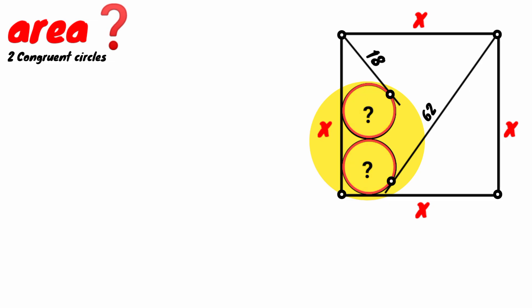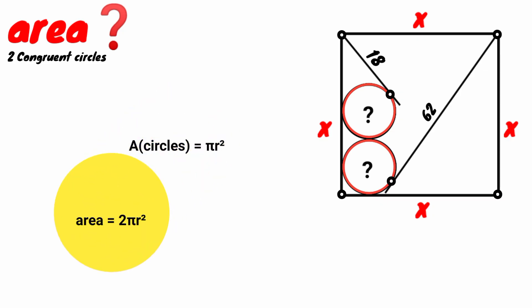Well, it is very simple. The formula for calculating the area of a circle is πr². Since the two circles are identical, they'll have equal areas. Therefore, the total area equals 2πr².